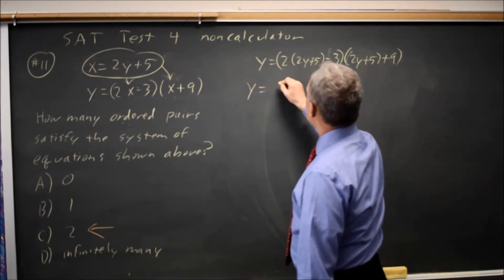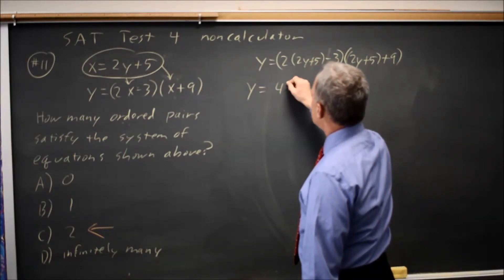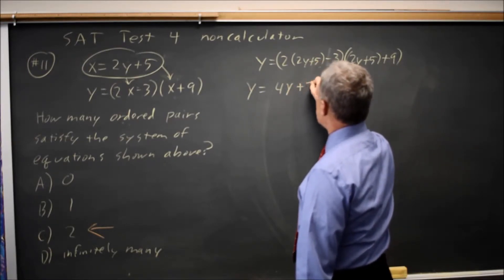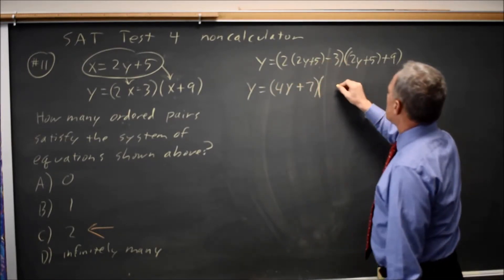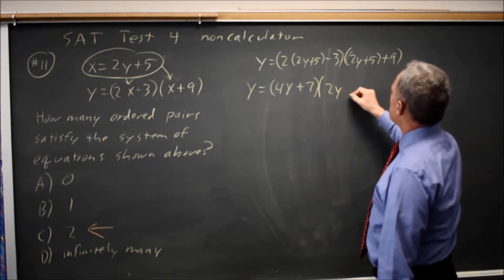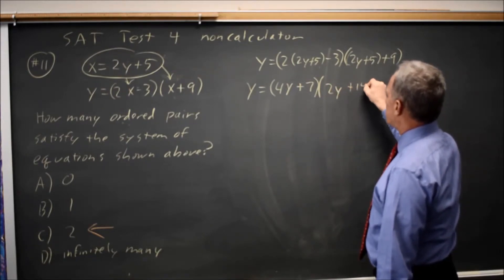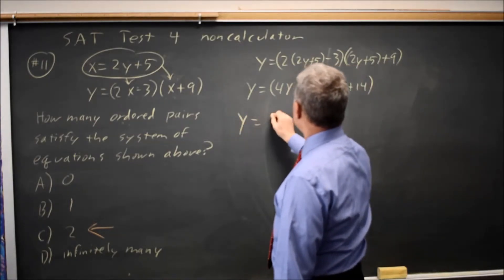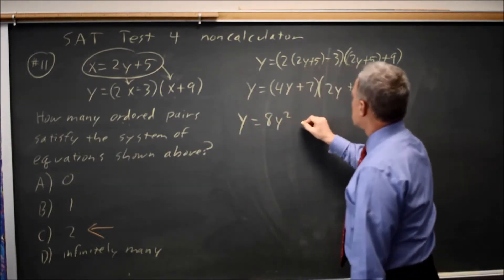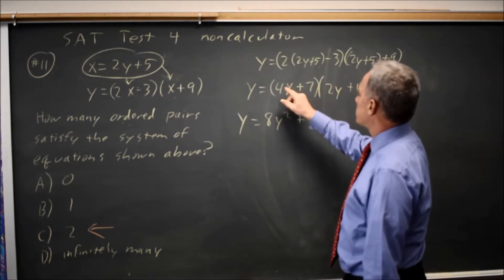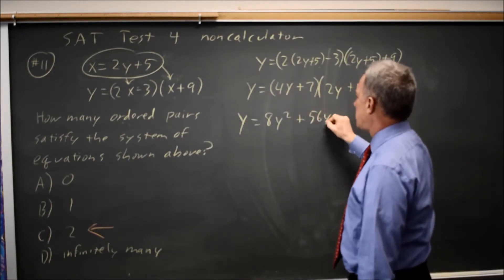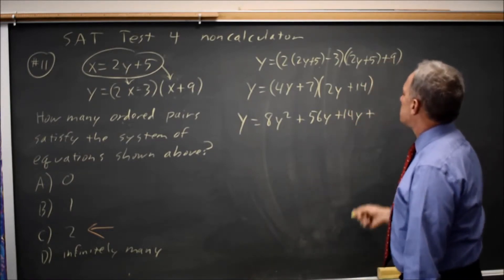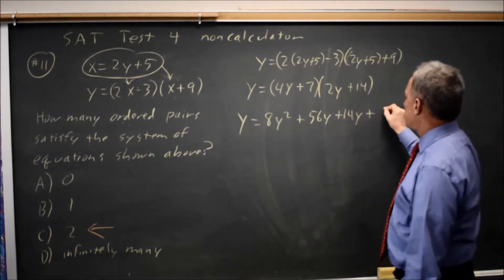Distributing, I have 4y plus 10 minus 3 is plus 7. 2y plus 5 plus 5 plus 9 is plus 14. Foil gives me y equals 8y squared plus 14 times 4 is 56y plus 7 times 2 is 14y plus 7 times 14 is 98.